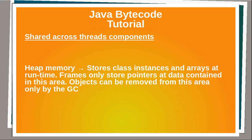Components which are shared across all threads: Heap memory stores class instances and arrays at runtime. Frames only store pointers to data contained in this area. Objects can be removed from this area only by the garbage collector.